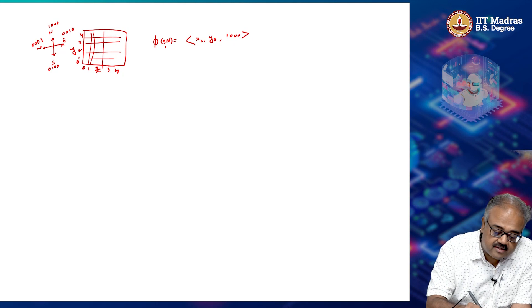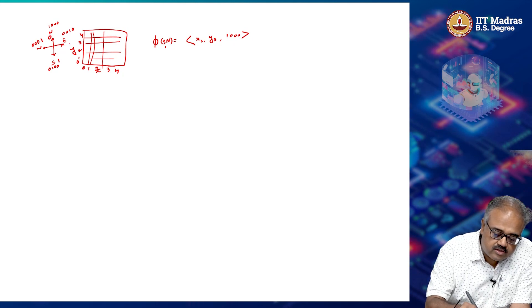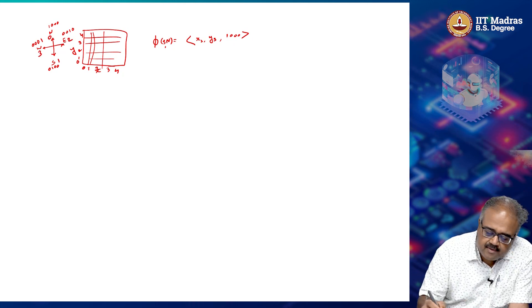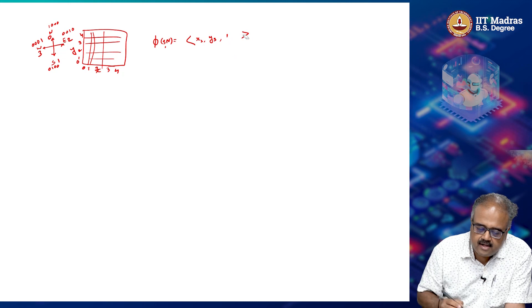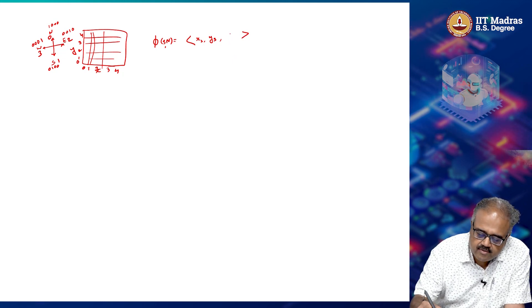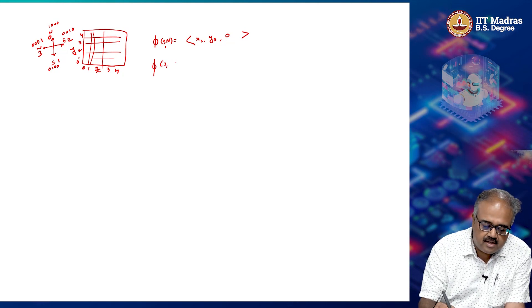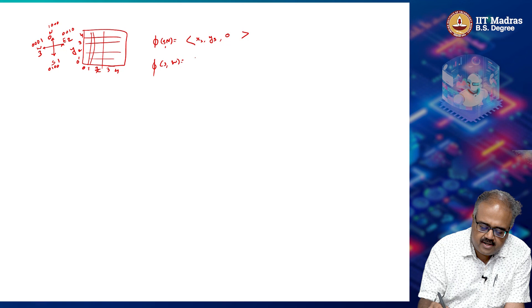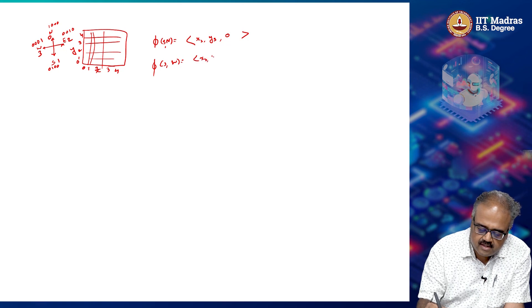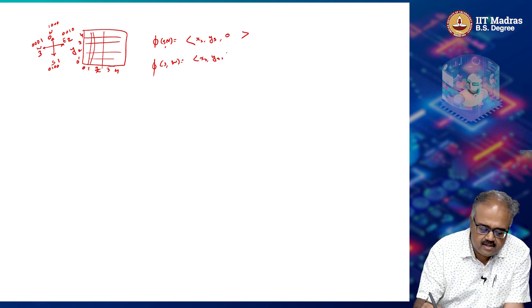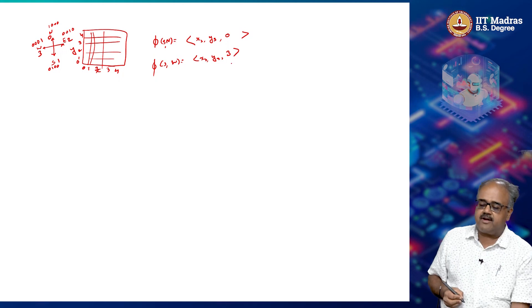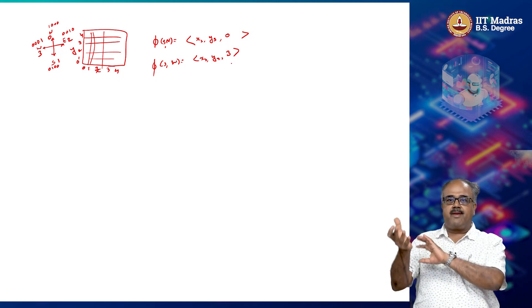Alternatively, I could have just done this. So north is 0, south is 1, east is 2, west is 3, in which case I would have done my action here would have been 0. And likewise, some other phi of s comma west would have been x s, y s and 3. That would have been my phi.